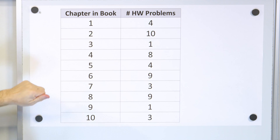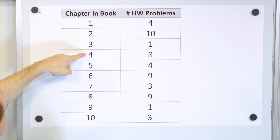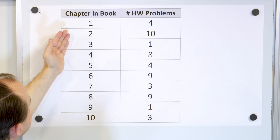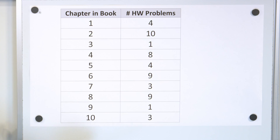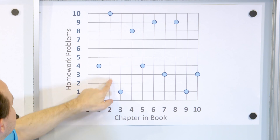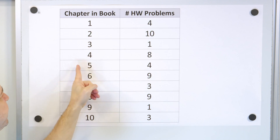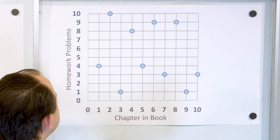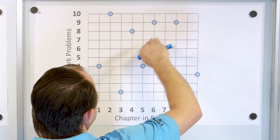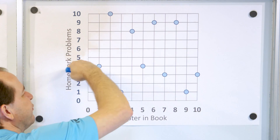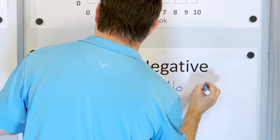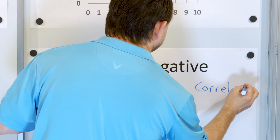Let's look at our last problem. Here we have a table of values showing the chapter number in a textbook — chapter one through chapter ten — and the number of homework problems at the end of each chapter. We treat the chapter number as x and the number of problems as y, and plot points like (1, 4), (2, 10), (3, 1), (4, 8), (5, 4), and so on. When you plot all of these points, the data looks all over the place. If I try to draw a line, it doesn't follow a trend up, down, or sideways. So we say there is no correlation.